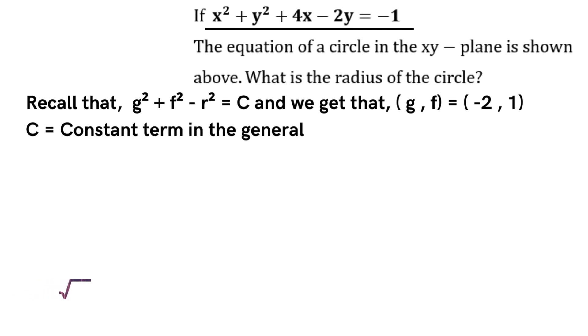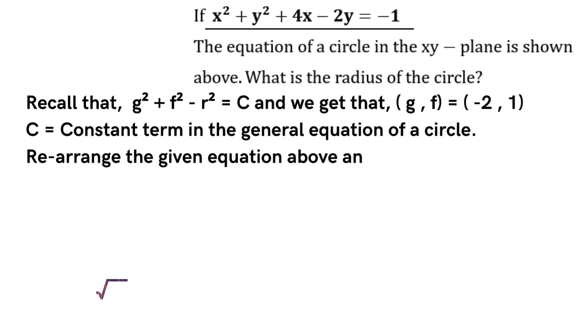Since g square plus f square minus r square equals the constant term c, rearrange, simplify and solve for r. We have that r, the radius, equals 2 units.